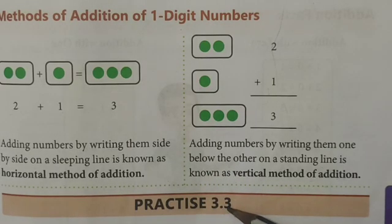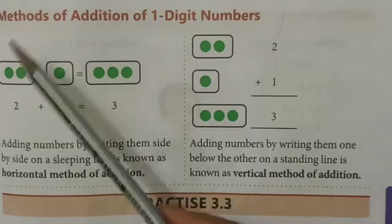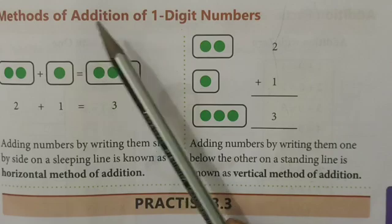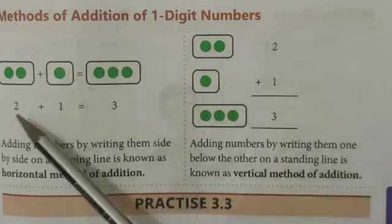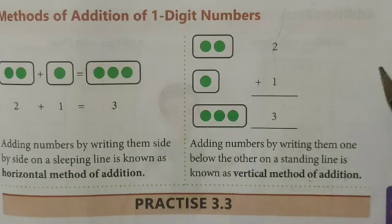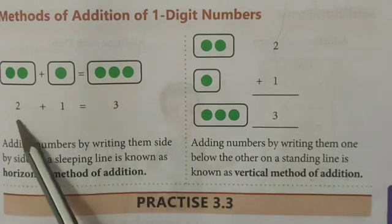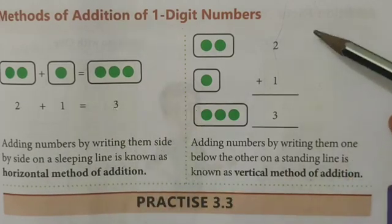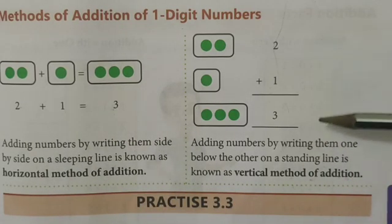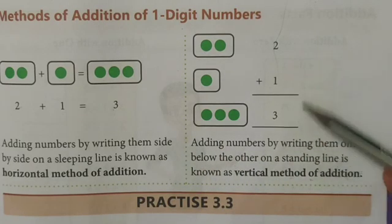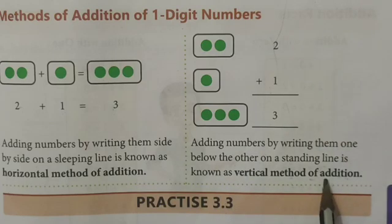Before starting Practice 3.3, we will learn some methods of addition of one digit and two digit numbers. There are two methods: the horizontal method of addition, where numbers are written on a slipping line, and the vertical method of addition, where numbers are added by writing them one below the other on a standing line.